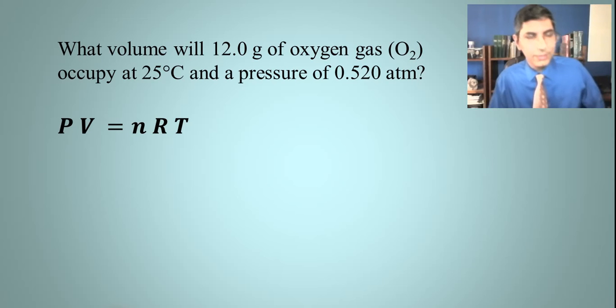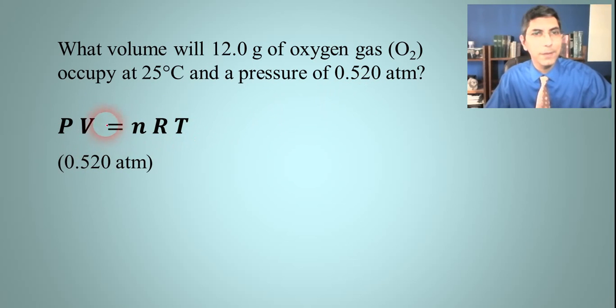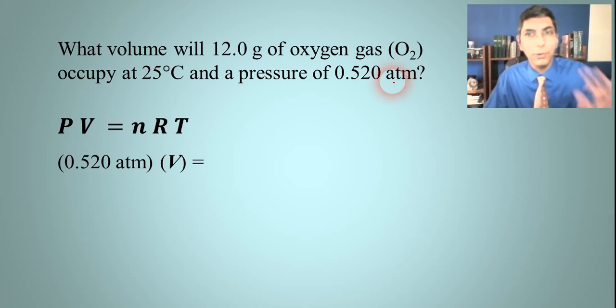Once again we don't have anything that's changing, so this sounds like a good ideal gas law problem. P will be the pressure, 0.520 atmospheres. V is what we're trying to solve for, so V will be my unknown. The problem doesn't tell me how many moles I have, but I can figure that out. It says we have 12.0 grams of oxygen gas, so I'm going to have to convert that.